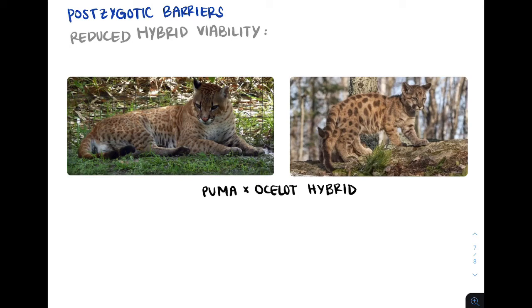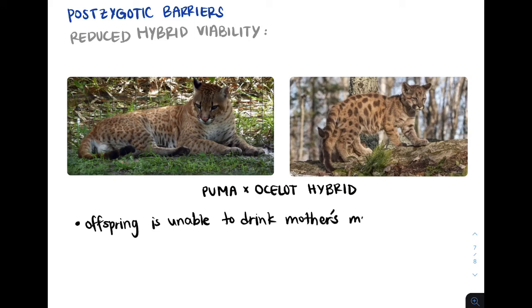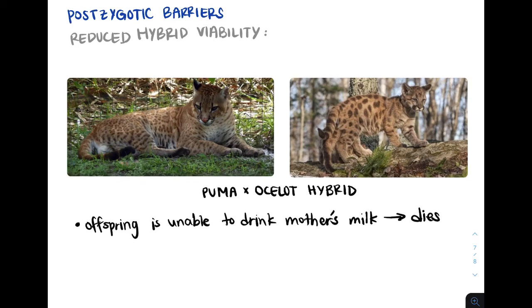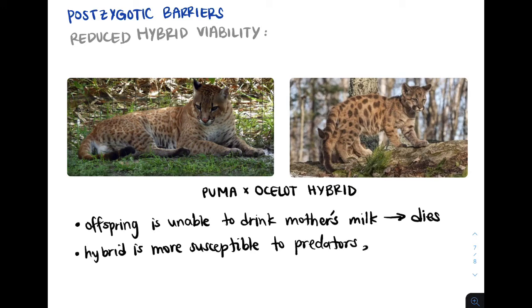Those were all the prezygotic barriers that prevent fertilization completely. Now let's look at postzygotic barriers, which allow fertilization but prevent a hybrid zygote from developing into a fertile adult. In this example, a puma and an ocelot fertilize to produce a hybrid; however, the hybrid offspring is unable to drink its mother's milk. As a result, its chances of survival are reduced. Many times when parents of different species produce a hybrid, the hybrid is more susceptible to predators, parasites, diseases, and other things in the environment that impair its survival.